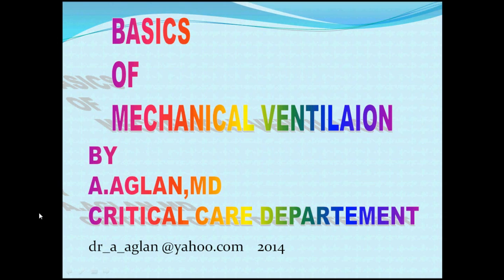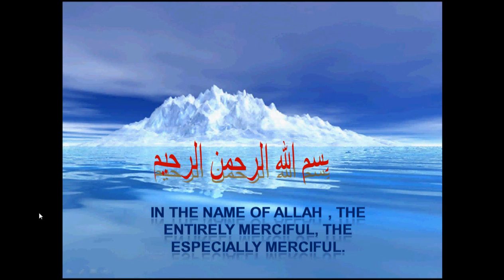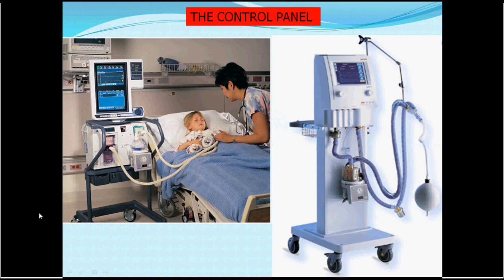Bismillahirrahmanirrahim. I think this is the last part about the composition of the ventilator itself. We are going to discuss the control panel — how to set the data and what data you can see on the ventilator. You input some data and through the passages, output data comes out in the form of operational resistance, compliance, and similar parameters.